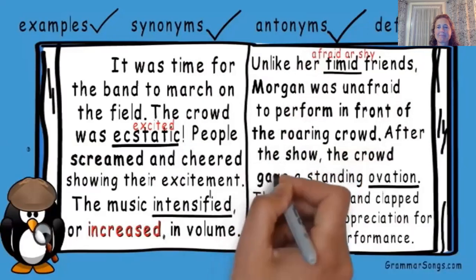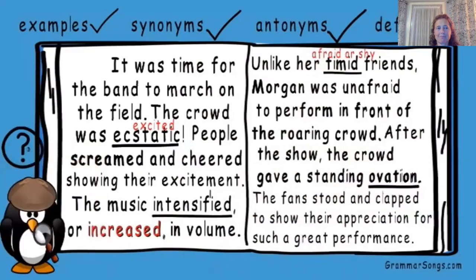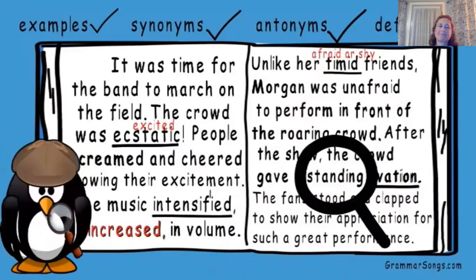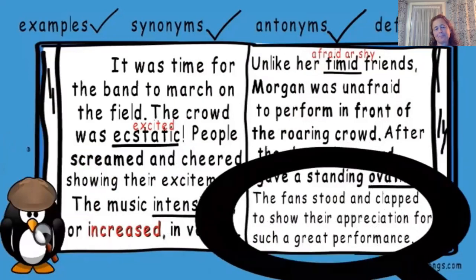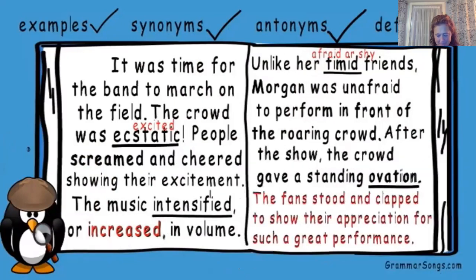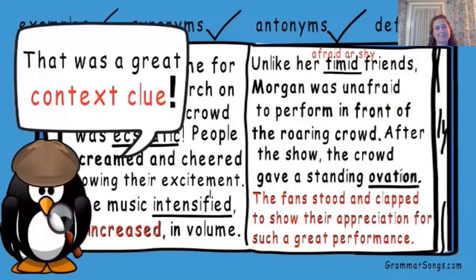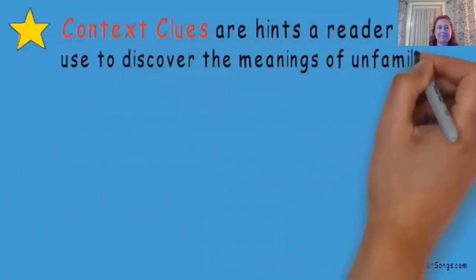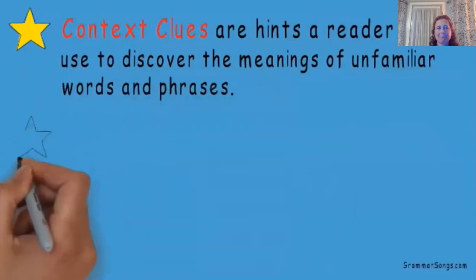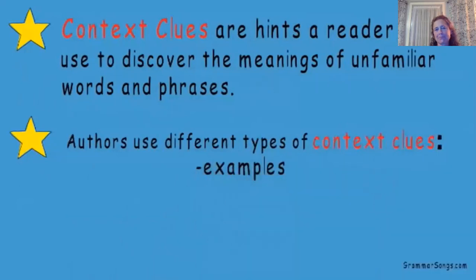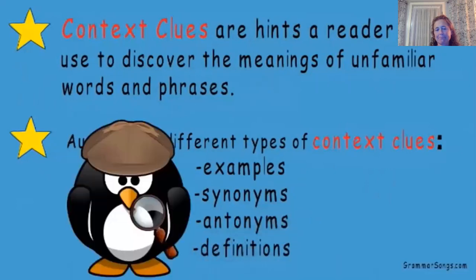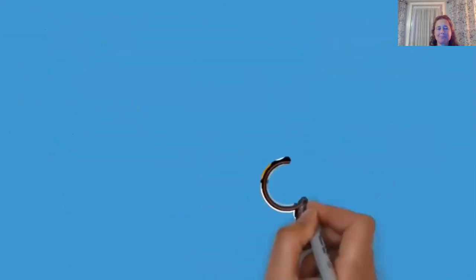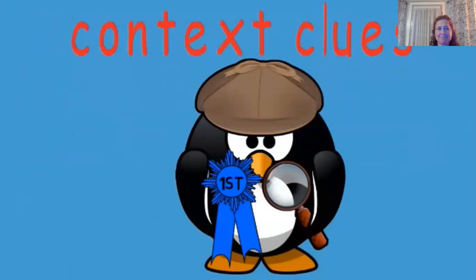After the show, the crowd gave a standing ovation. There aren't many clues in this sentence except we know there is standing going on, so let's keep reading. The fans stood and clapped to show their appreciation for such a great performance. The author uses a definition as a clue — an ovation is when the whole crowd stands, claps, and cheers. Remember, context clues are hints a reader can use to discover the meanings of unfamiliar words and phrases, including examples, synonyms, antonyms, and even definitions.